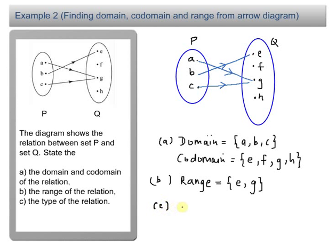So for C now, we have to define the type of relation. Look at it carefully, you can see that there are two objects, A and C, mapped to only one image, only G. If you have two objects mapped to the same image, this should be a many-to-one relation. So you just write there, many-to-one.